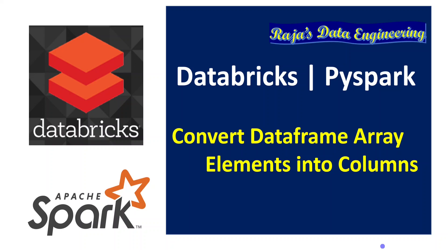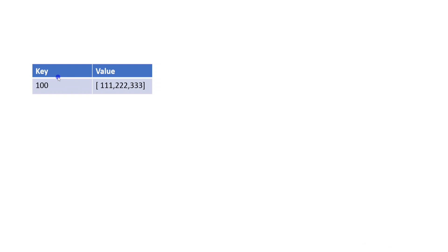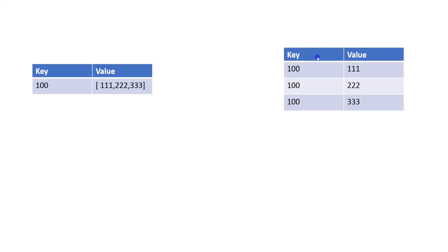Let's say we have a DataFrame with an array column. In that array we have a list of elements. The requirement is we have to split those elements into separate columns. For example, this DataFrame has two columns: key and value. The value column is array data type having values triple one, triple two, triple three. In order to flatten this array into separate rows we can use the function explode.